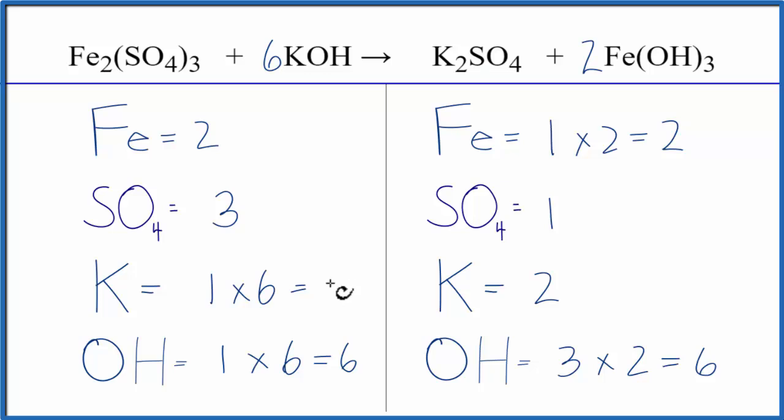So we're going to put a three in front of the potassium sulfate to balance the potassium. Two times three gives us six. But we have one sulfate times three, that gives us three of those, which balances the sulfates. And we're done, this equation is balanced.